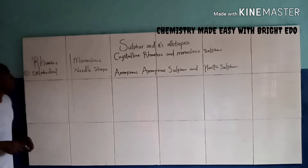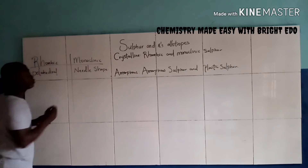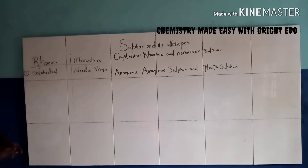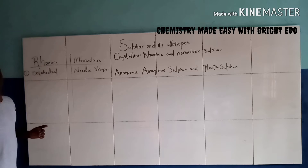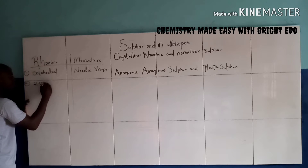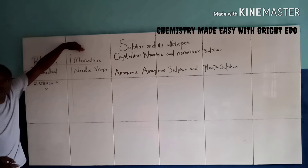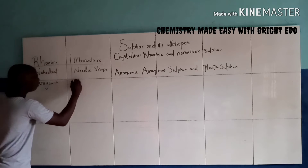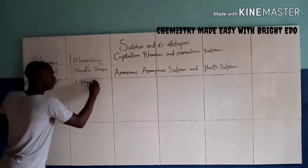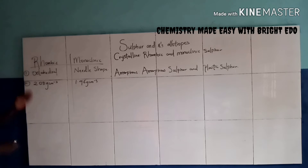Now let's talk about the density of Rhombic Sulfur. Rhombic Sulfur has a density which is approximately 2.08 grams per cm³. While for the Monoclinic Sulfur it is approximately 1.98 grams per cm³.